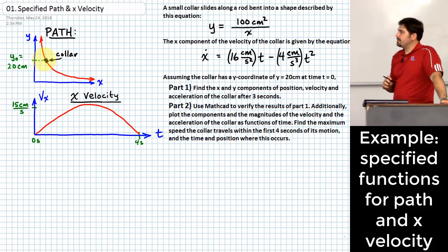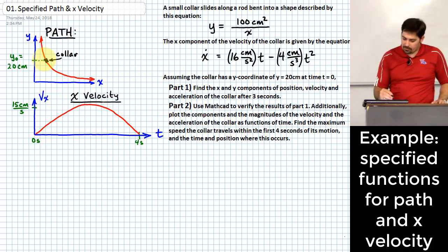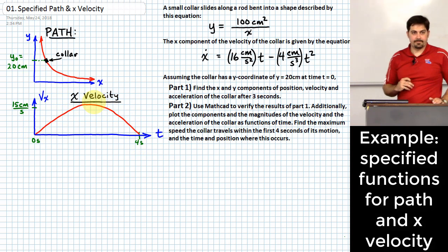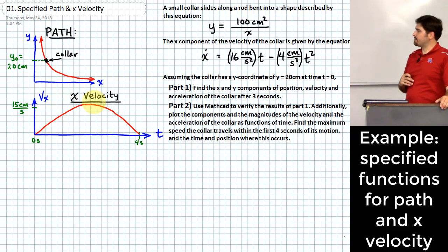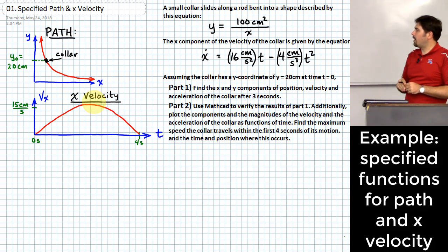We give it this x velocity profile with respect to time. We're looking basically within the first four seconds of motion. The x component of velocity looks like a parabola. We're supposed to find the x and y components of position, velocity, and acceleration when we reach a time of three seconds.